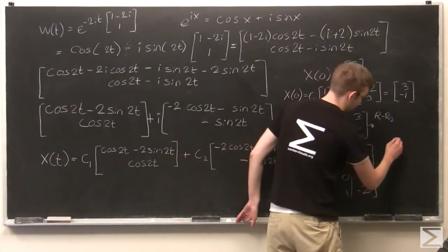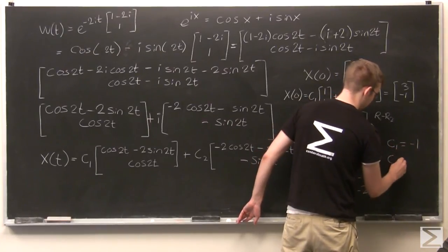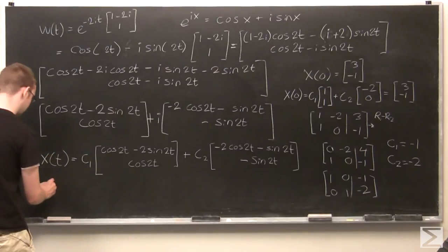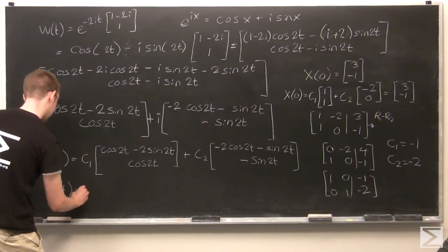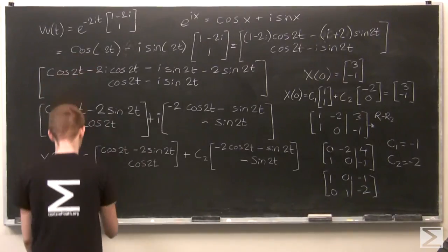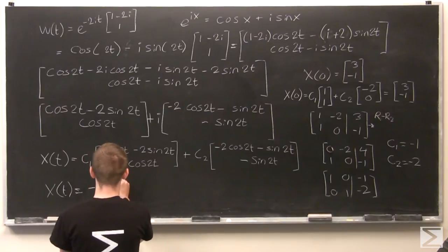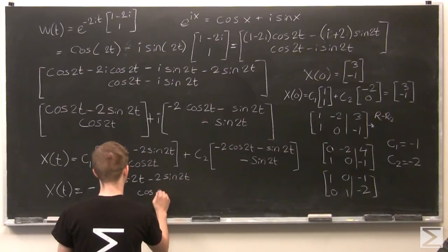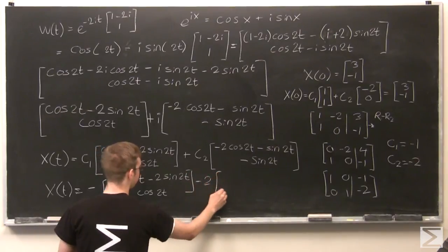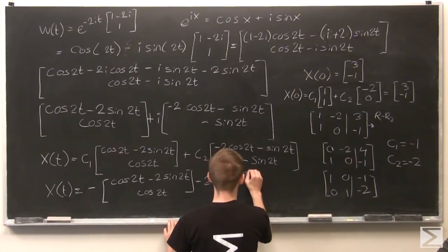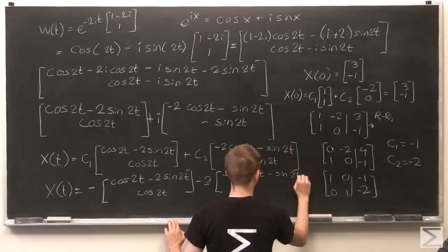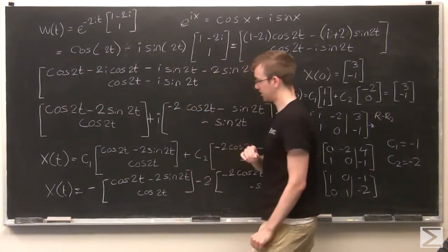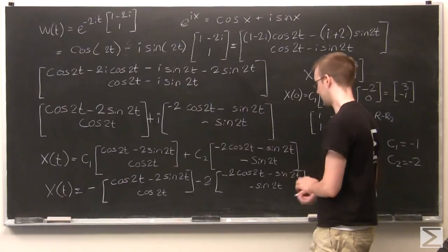There we go. So I'll just plug this into this equation and then we'll be done. And that will be my final solution. Okay, so that's minus all this junk, minus 2, all that junk again. Cool. So that's our general solution, that's our particular solution with these initial coordinates, and we're all done.